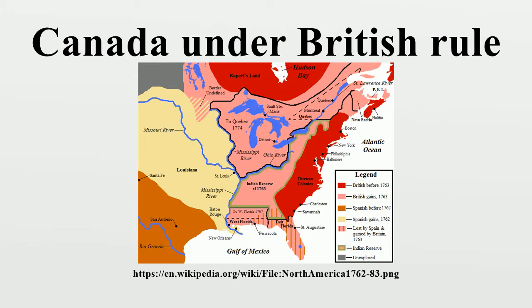In Nova Scotia there was some agitation against British rule, largely instigated by Jonathan Eddy and John Allen, migrants from Massachusetts who had settled in the Chignecto Isthmus area near Fort Cumberland. The only major event of their resistance was the Battle of Fort Cumberland, when Eddy and a combined force of Massachusetts patriots, Acadians, and Indians besieged the fort in November 1776. The siege was broken and Eddy's forces were scattered when British reinforcements arrived. Eddy and Allen continued to make trouble on the frontier between Maine and New Brunswick for several years. The maritime provinces were also affected by privateering and raids on settlements.